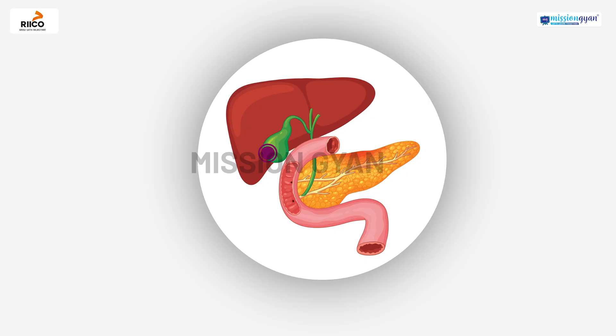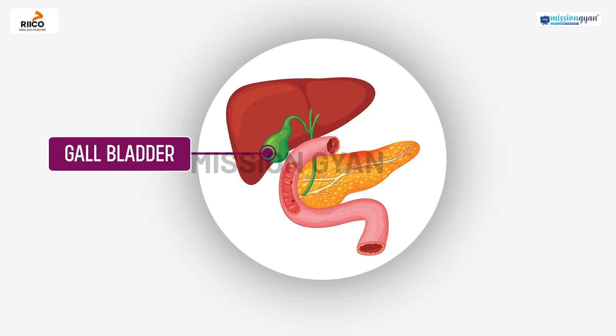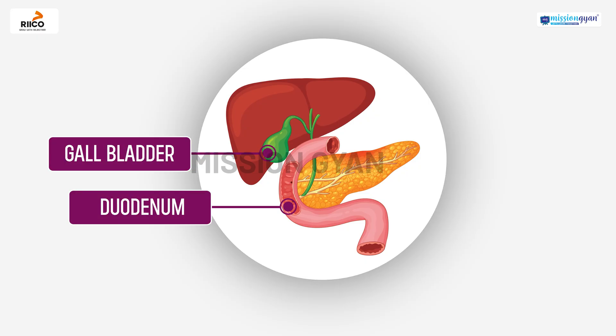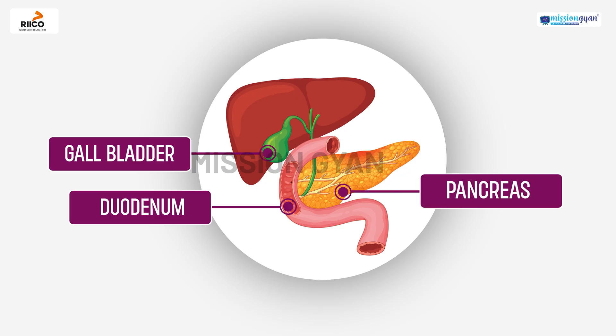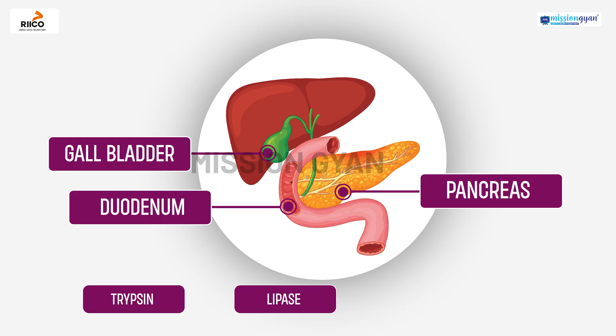Bile is stored in the gallbladder and released into the duodenum. The pancreas releases digestive enzymes like trypsin for digesting proteins and lipase for breaking down emulsified fats into the duodenum.